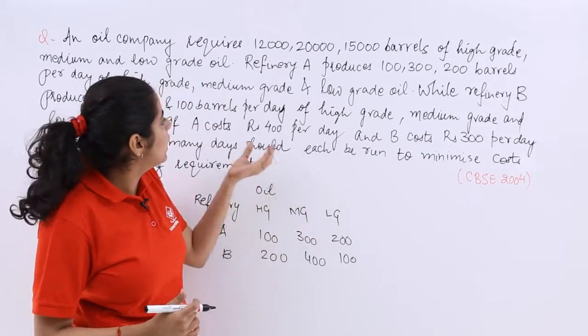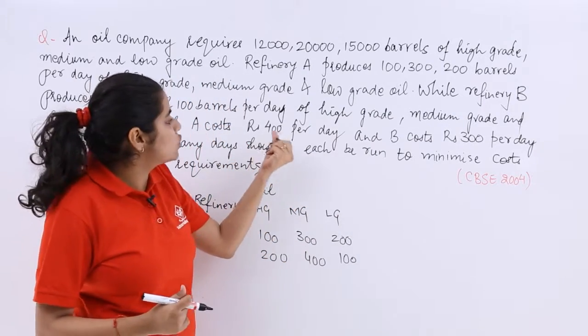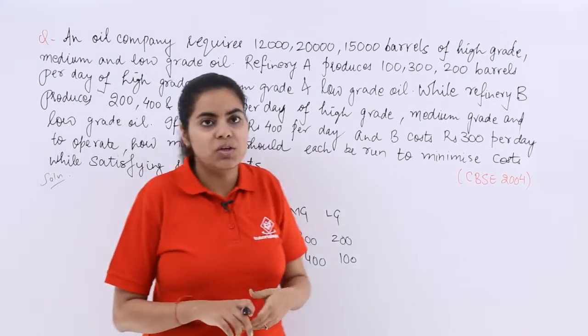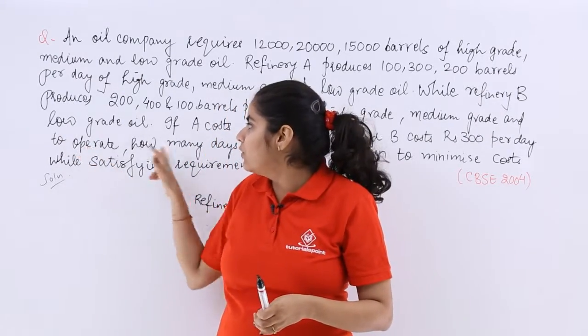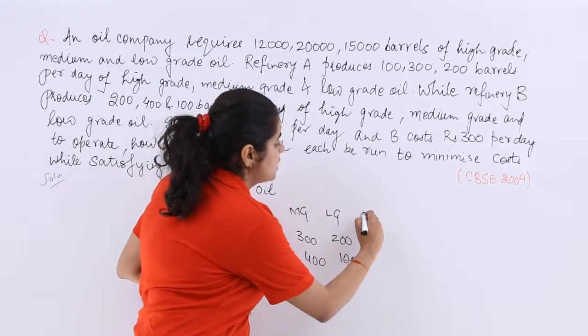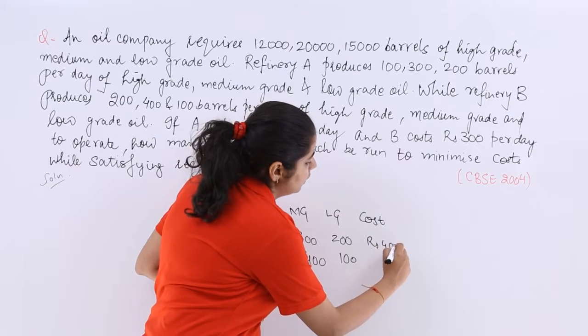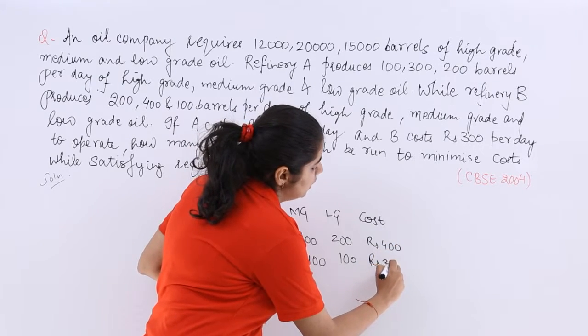The next it is saying about if A costs Rs. 400 per day, B costs Rs. 300 per day. So A and B cost Rs. 400 and 300 per day. So this is your A. This is the cost per day Rs. 400. This is Rs. 300.